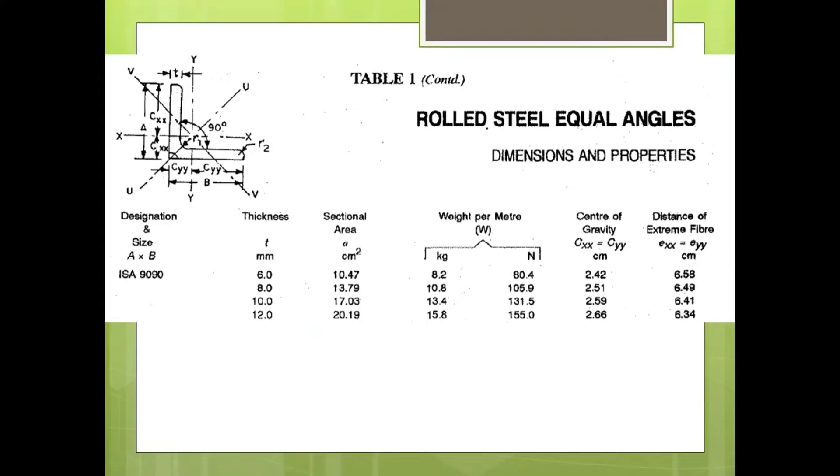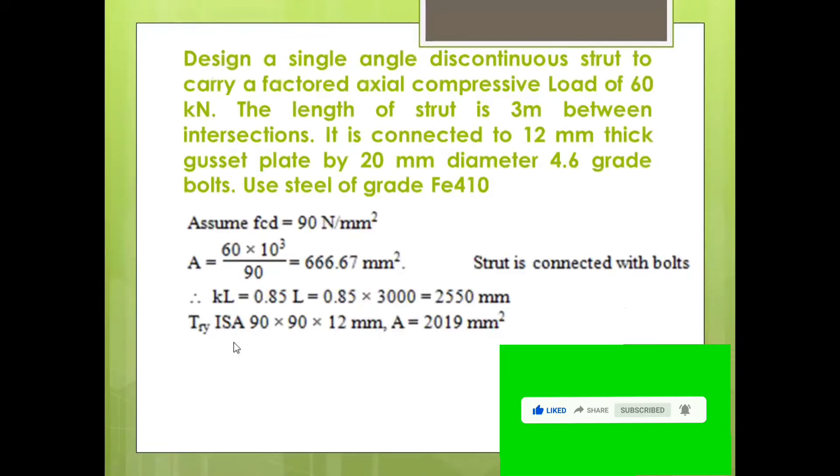You can select lesser area also, which is closer to 666.67. Deliberately a section with higher area is selected. You can move with 6 mm thickness section, 8 mm thickness section, 10 mm thickness section, 12 mm thickness section. Even you can change this 90 by 90 to 80 by 80, 70 by 70 provided that area is at least equal to or more than 666 mm square. So we have selected 2019 mm square area with 12 mm thickness of the section 90 by 90 by 12.